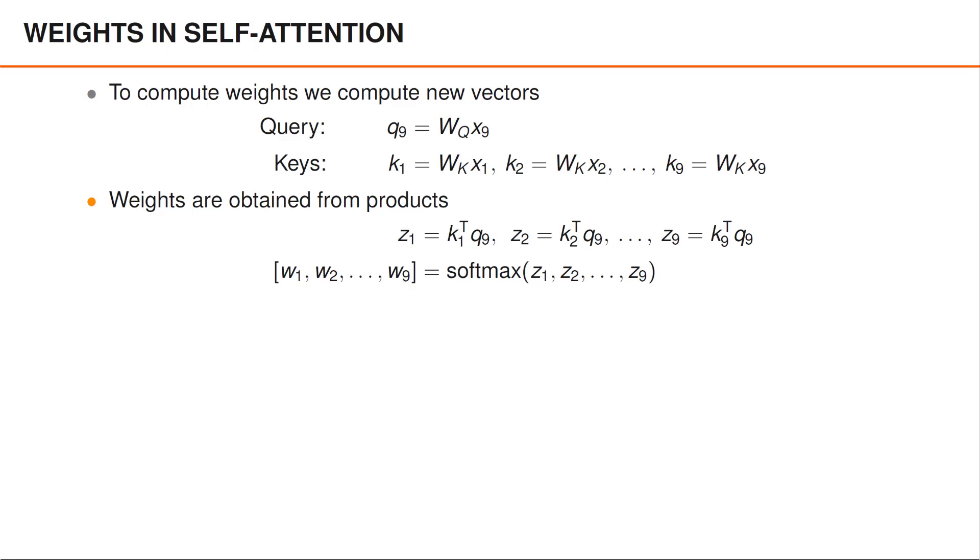At the same time, it arguably becomes even more complicated to know what's going on. Previously we could argue that words that are similar in some sense might have similar word embeddings and that this would give large inner products and thus large weights.